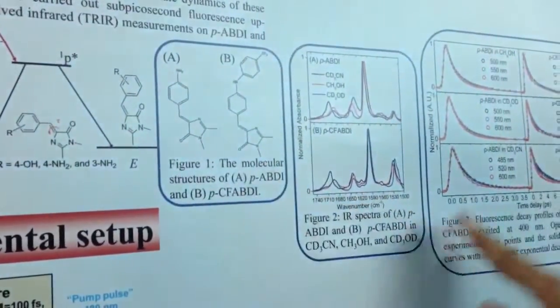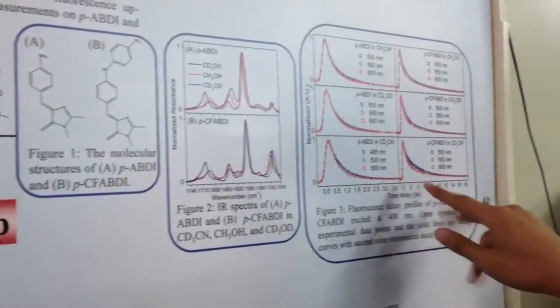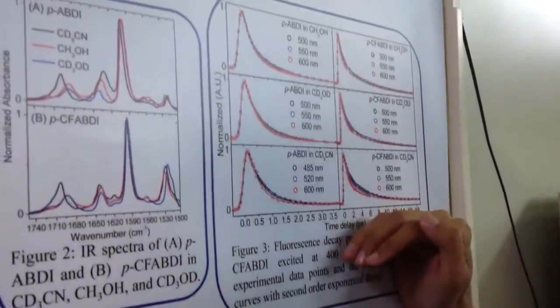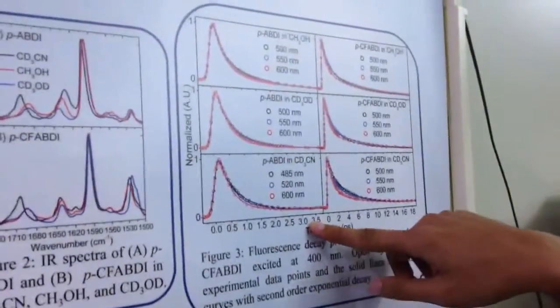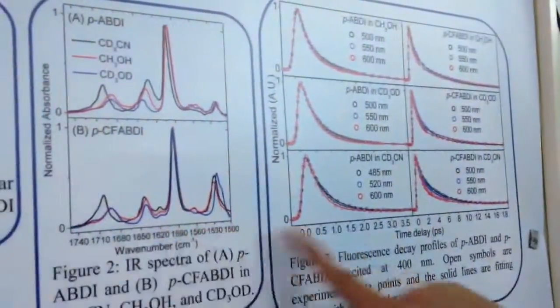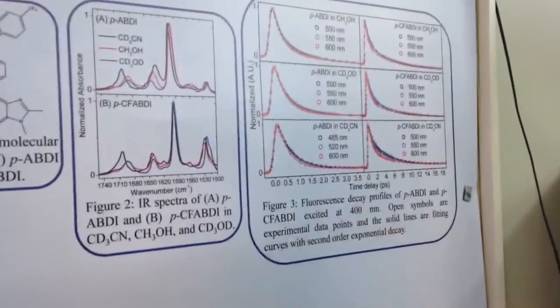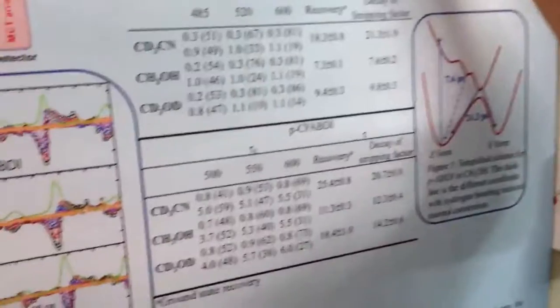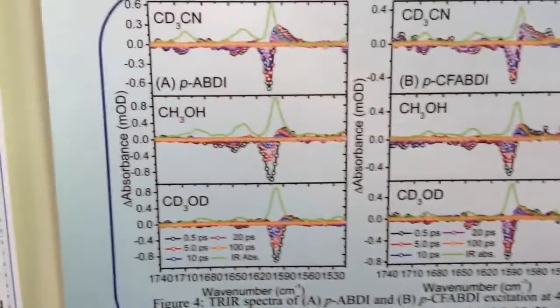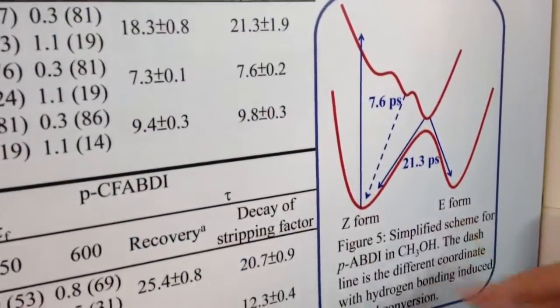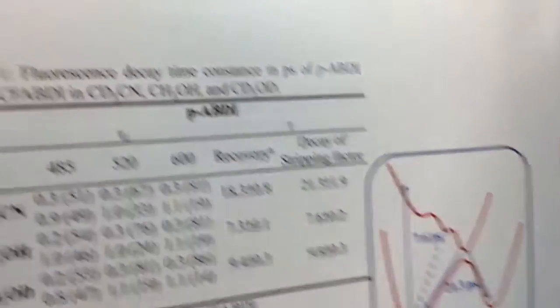We use the FOG system — fluorescence optical gating system — made by CDB, and we measure the CDB decay of these two compounds. We can know the excited state decay, and we use the homemade system as well. Combining these two results, we can get the excited state decay of these two compounds and obtain the data.